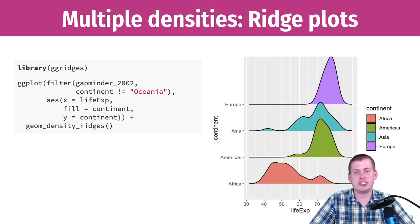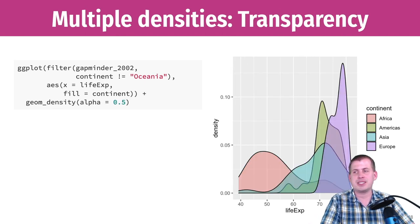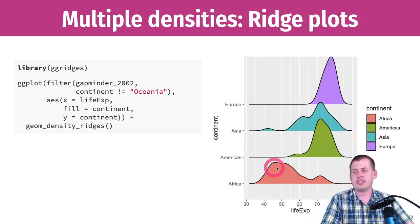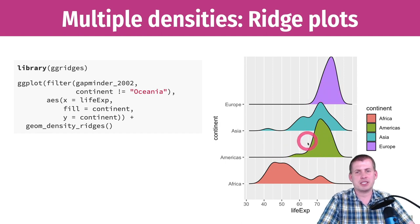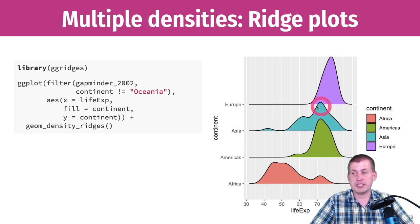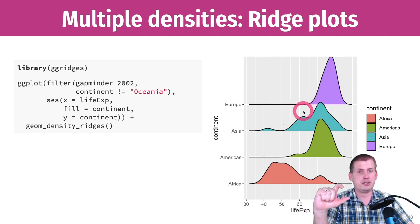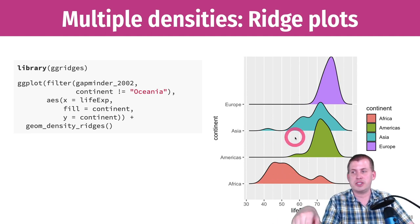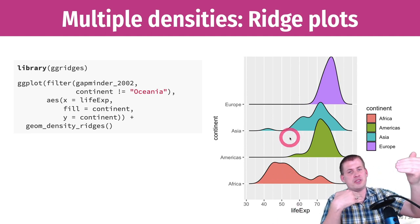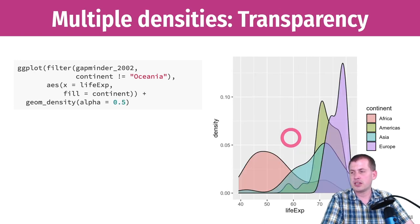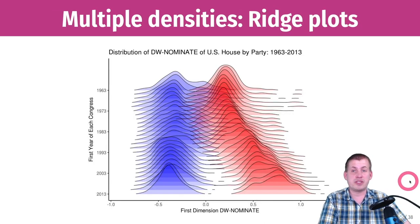To avoid that clutter, there's a package called ggridges that creates ridge plots — the same density plots but staggered and partially overlapping. You get the four different densities where the Americas sit on top of Asia, and the tip of Asia on top of Europe. If you shrink the height, Africa overlaps on top as well. They all kind of overlap but it makes them easier to read than fully overlapping transparent curves.